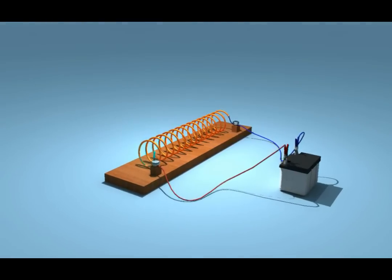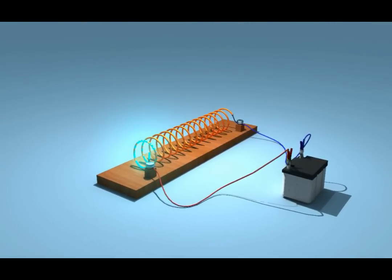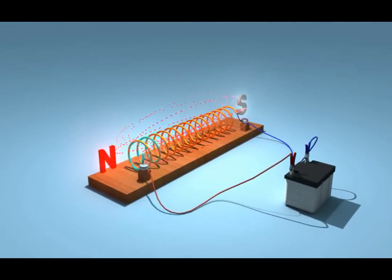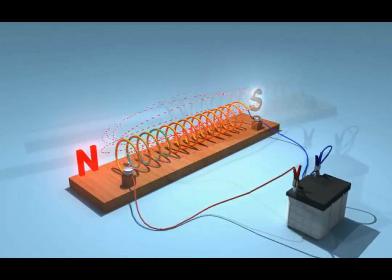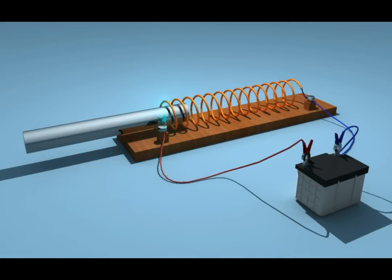It shows that on passing electric current, the solenoid turns to a magnet having north and south poles.